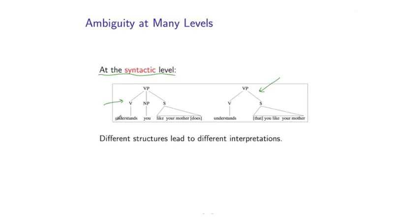So in fact, these two interpretations where the computer understands you as well as it understands your mother, versus it understands the fact that you like your mother, actually correspond to two quite different syntactic structures. So one of the key problems in natural language parsing is essentially disambiguation, choosing between different syntactic structures corresponding to different interpretations.